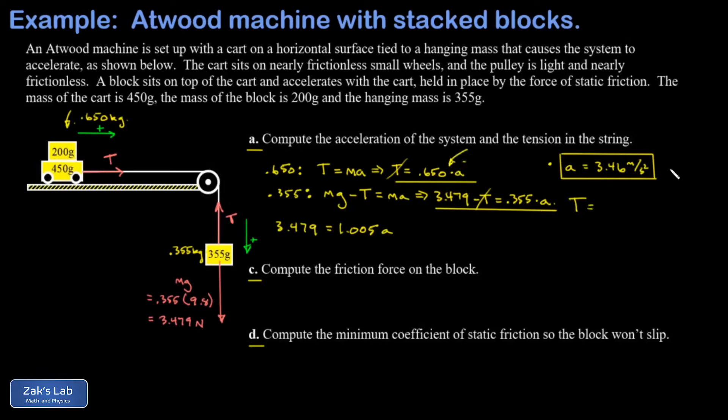And I can go back to either one of the original equations to get this done. I'm going to go back to the first one because it's the simplest. So T is equal to 0.650 times A. And now I have A. And I get a tension of 2.25 Newtons.